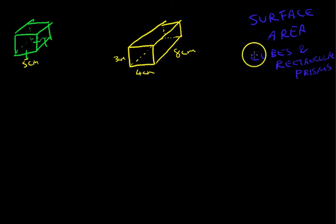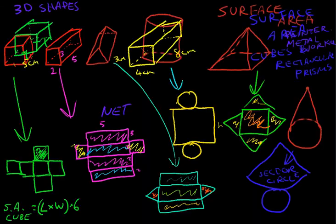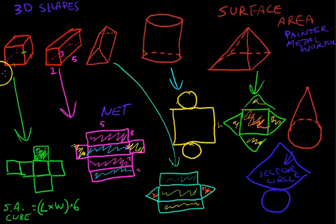Surface area here and we're looking at finding the surface area of cubes and rectangular prisms. Now remember our last video, a cube is just six shapes, six squares.